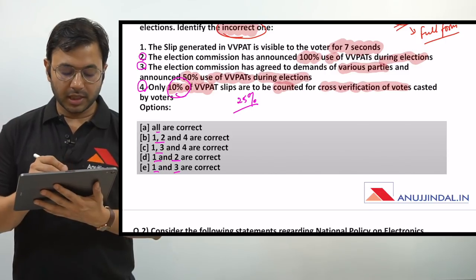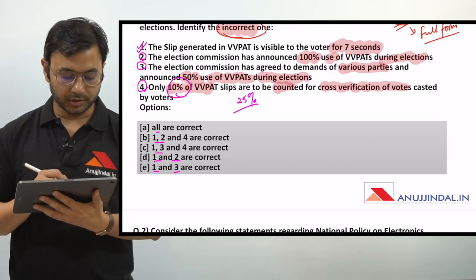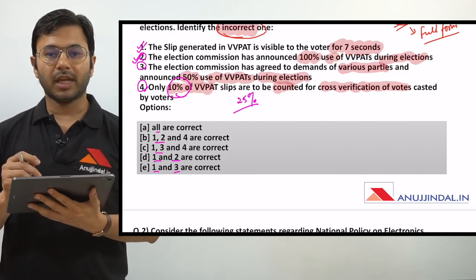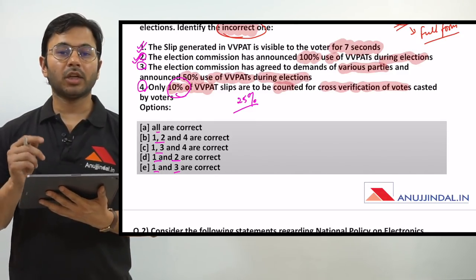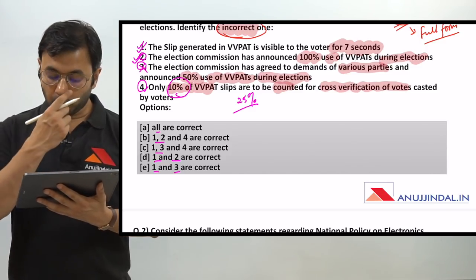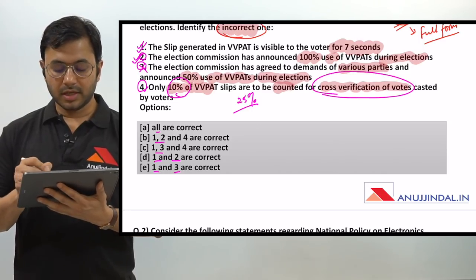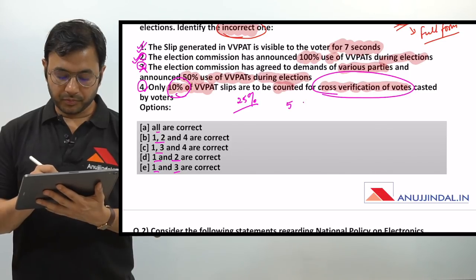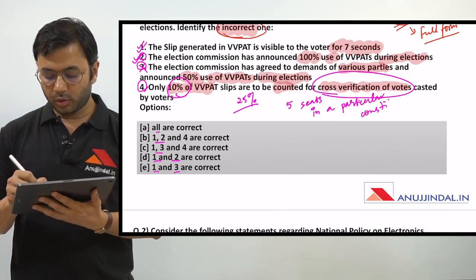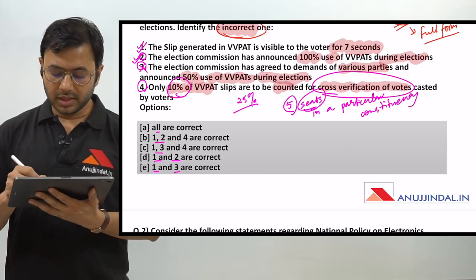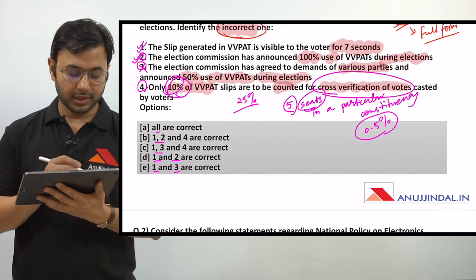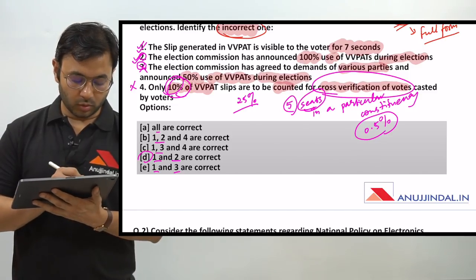So which are the incorrect ones? The slip generated in VVPAT is visible to voter for 7 seconds - this certainly is a correct option. The election commission has announced 100% use of VVPATs during elections - this also is correct. The election commission has announced 100% use of VVPATs, but not 100% counting of VVPATs after counting is done on the EVM. Therefore point 3 is incorrect. Only 10% of VVPATs are to be counted for cross-verification - the actual number is not 10%. It is 5 polling booths in a particular constituency, which is almost 0.5% and sometimes even less than 0.5%. So the answer of 10% in the fourth option is also incorrect. The correct options are 1 and 2 only, that is option D.